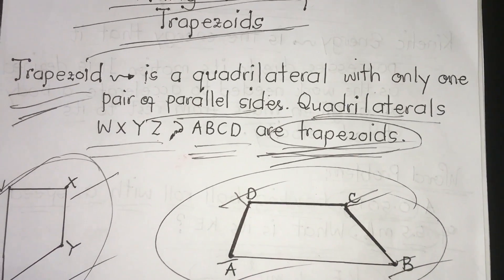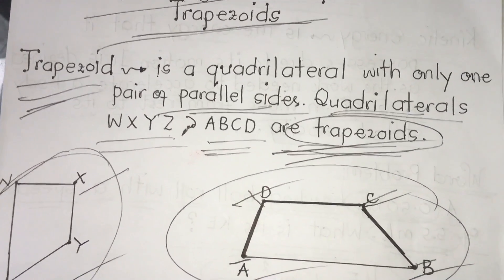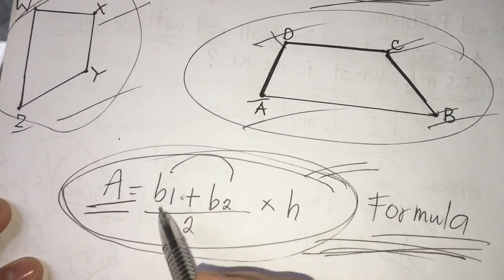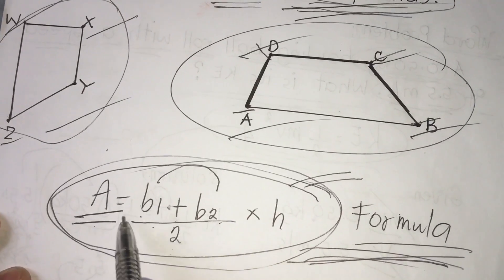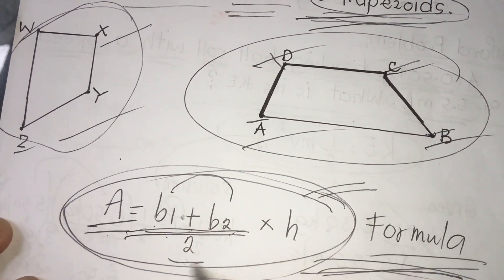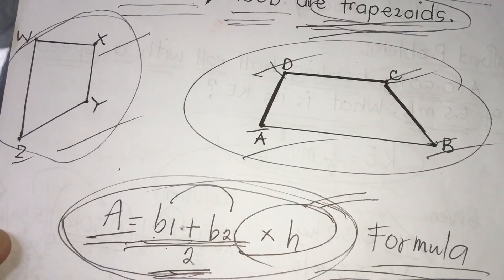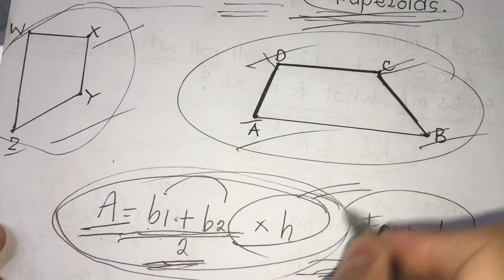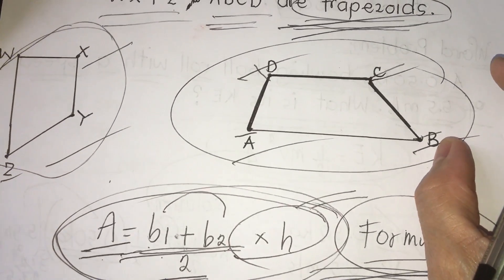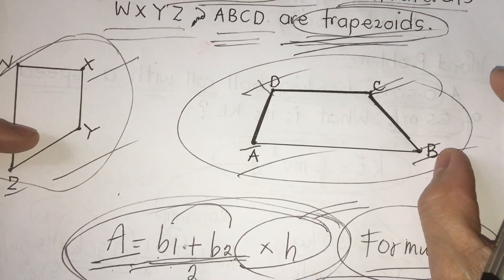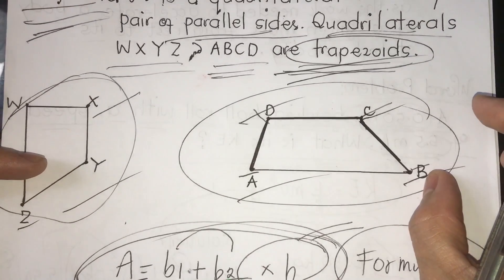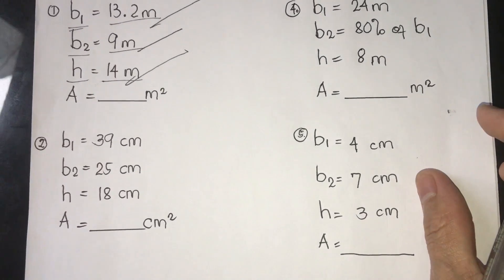We have first a formula for getting the area of a trapezoid. A is equal to base 1 plus base 2, that is b1 plus b2, divided by 2, then we're going to multiply by the height in order to find the right answer. We have first a drill — all we have to do is follow our formula.